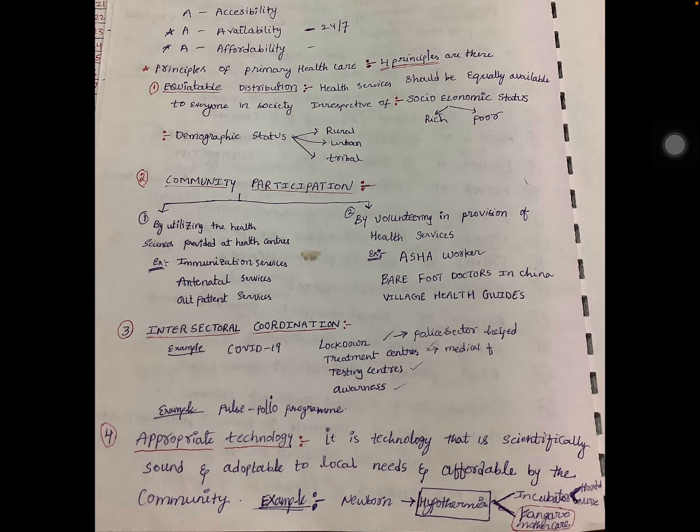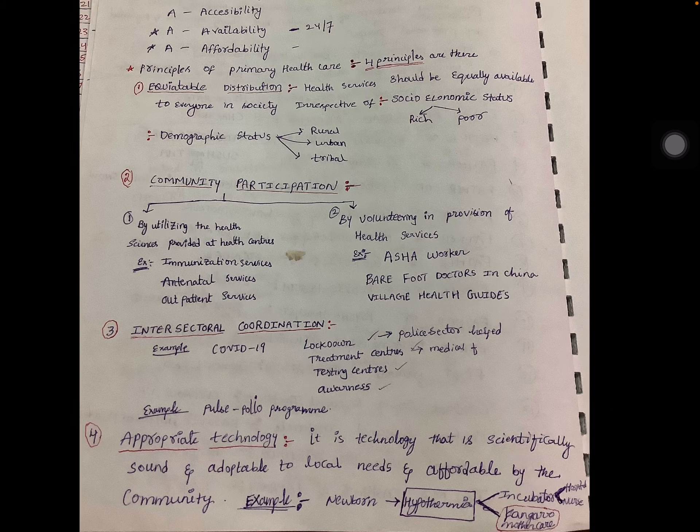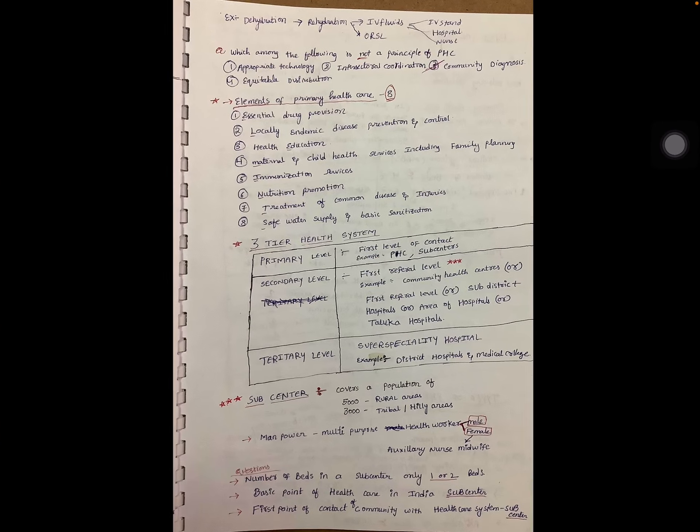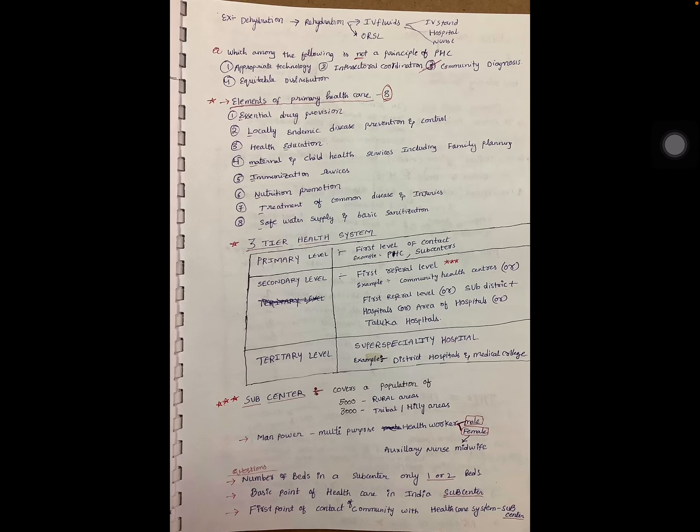Appropriate technology is technology that is scientifically sound, adaptable to local needs, and affordable by the community. Example: a newborn with hypothermia can be placed in an incubator — requiring hospital and nurse — or alternatively, kangaroo mother care can be used. Another example is dehydration: treatment can be IV fluids requiring a hospital, or ORS which is simpler and community-appropriate.